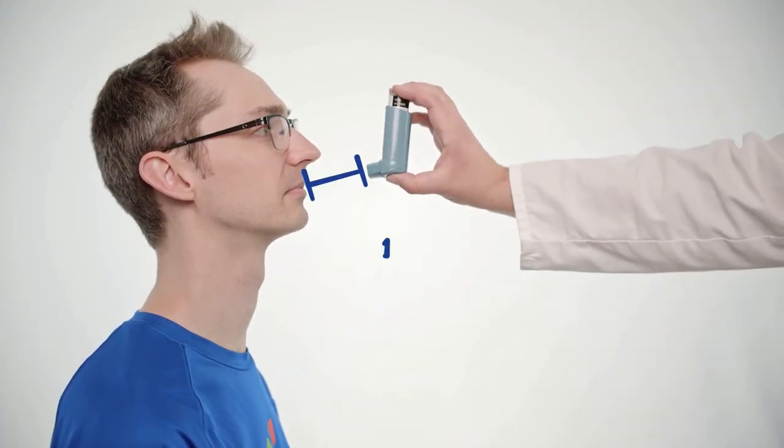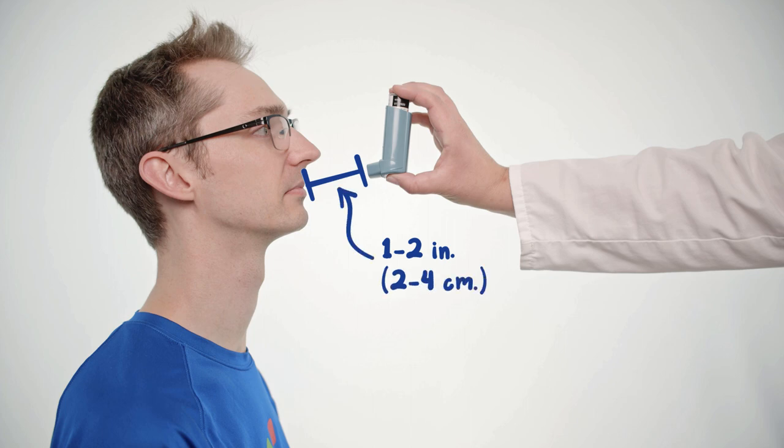Raise the inhaler to the patient's mouth, holding it about 1-2 inches or about 2-4 centimeters away and aiming towards the back of the throat.